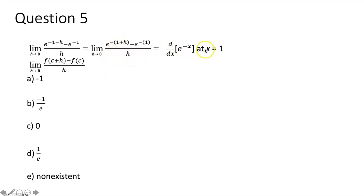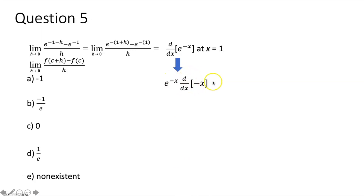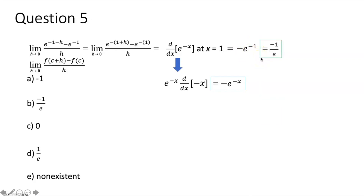Now we can see that our function f is e to the negative x and we're taking the derivative at x equals 1. The derivative of e to the negative x requires the chain rule: it's e to the negative x times the derivative of negative x, which is negative 1, giving negative e to the negative x. Evaluating at x equals 1: negative e to the negative 1, which written with a positive exponent is negative one over e. That is choice B.